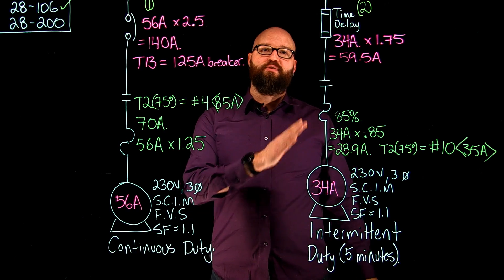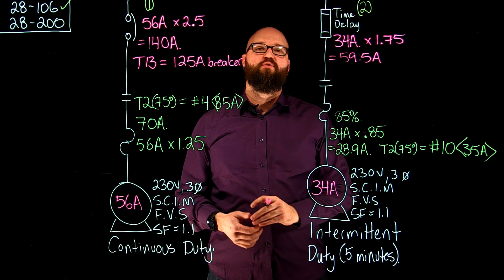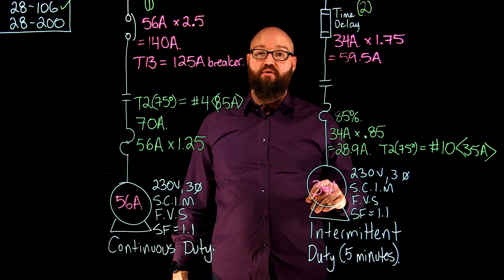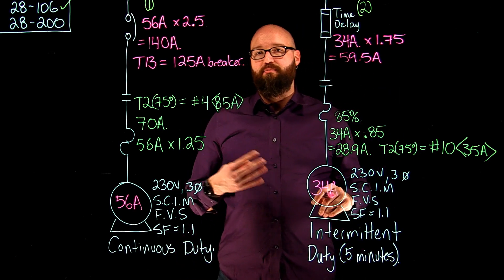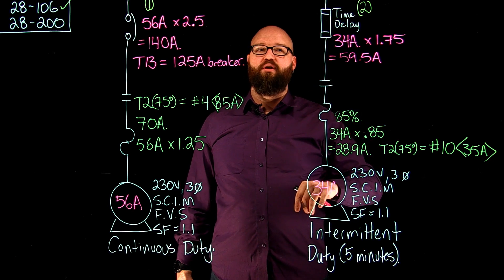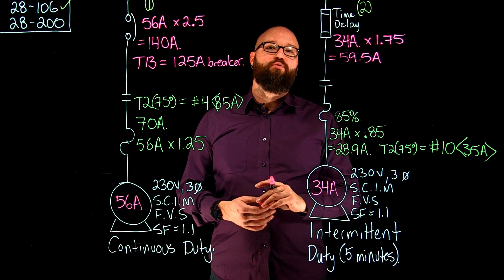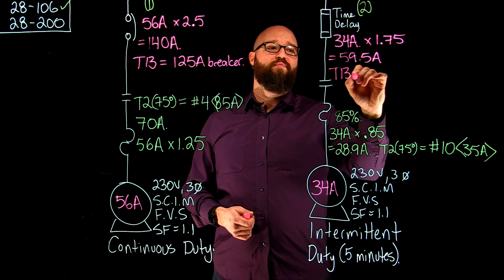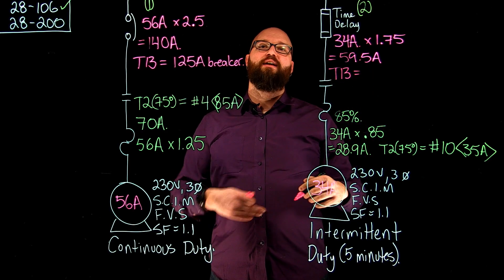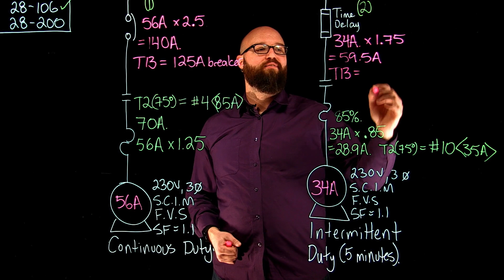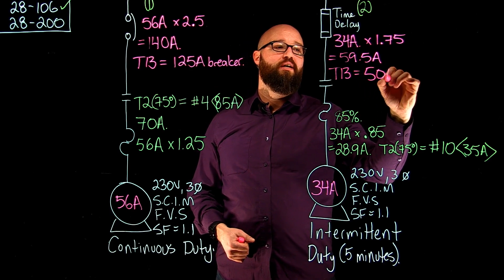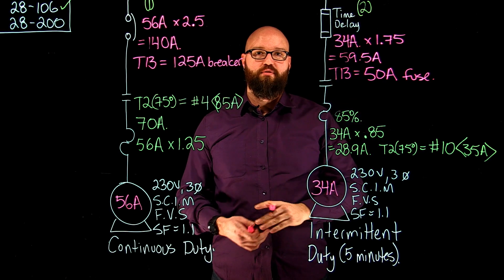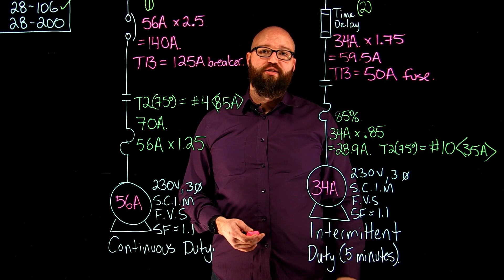That is the absolute maximum, according to 28-200, that my overcurrent could be. So if I'm looking for a calculated value, or a maximum setting, this would be the number that I'm looking for. If I want to define the actual rating of the overcurrent device, I would go to table 13, and I would select, I cannot exceed the values, I would have to go down to a 50 amp fuse, in this case, a time delay fuse. So hopefully this has helped. Thank you for watching.